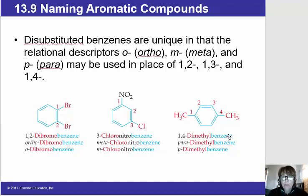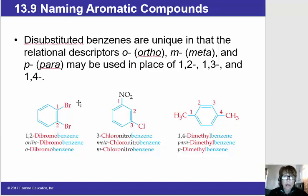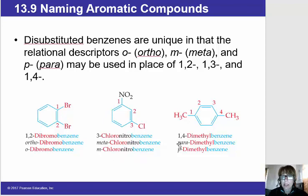Now there's an old-fashioned description that is still used. "Ortho" or O is used when two substituents are in the 1,2 position. "Meta" or M is used when two substituents are in the 1,3 position. So rather than saying 1,2-dibromo, I could say ortho-dibromobenzene or O-dibromobenzene. Same thing with 1,3-chloronitro — I could say meta-chloronitrobenzene or M-chloronitrobenzene. And then instead of saying 1,4-dimethylbenzene, I could say para or P-dimethylbenzene.